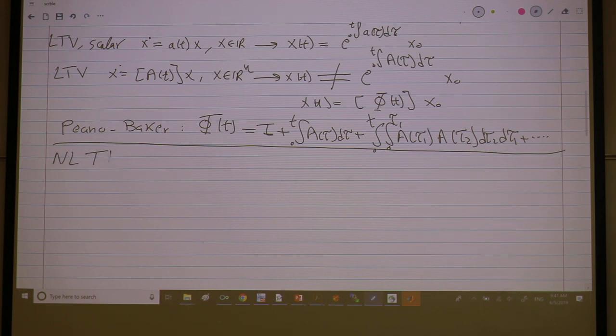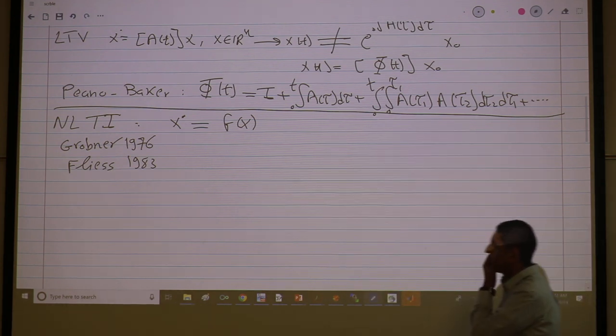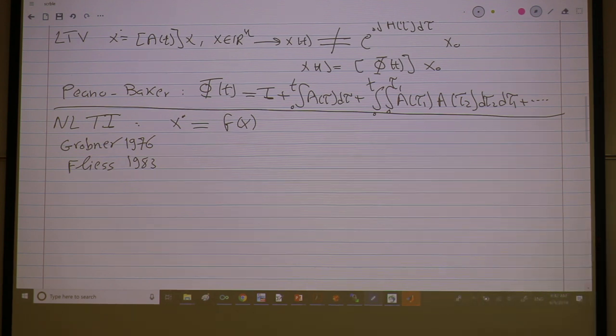So now we're talking about non-linear time invariant. So x dot is f of x. And this has been tackled before, by the way. This paper is 1978. This has been tackled before. At least I know that, I'm aware of the paper of Grobner, 1976. There might be something before, I don't know, but at least this was before the chronological calculus. And there is the Fliess paper that is more famous, but it's after. I'm not sure if the Fliess paper cited the chronological calculus or not. It might be isolated, and it's around the same time frame. But this paper cited Grobner, so this is time invariant which we call autonomous.